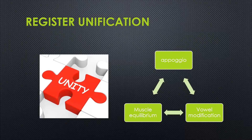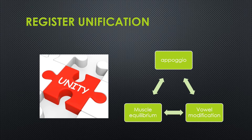We've learned that register unification is the most desired goal in classical singing technique from the previous video on register. Register unification is achieved by a balanced combination of apojo, muscle equilibrium, and vowel modification.